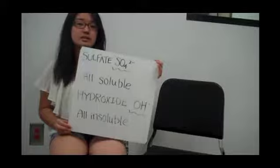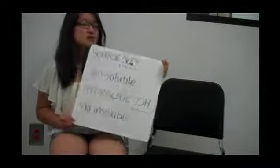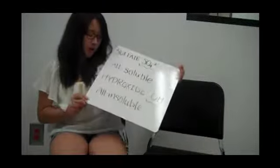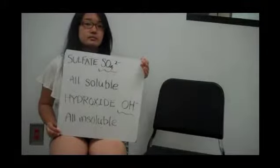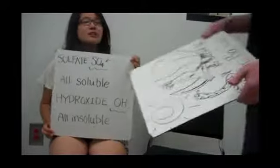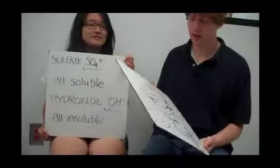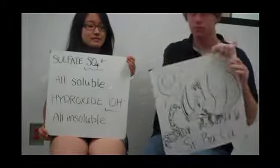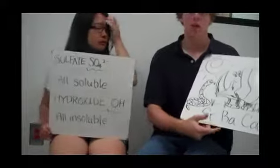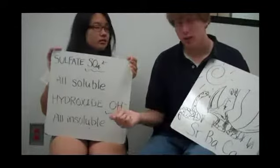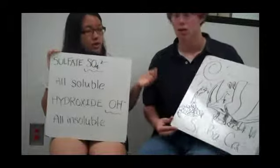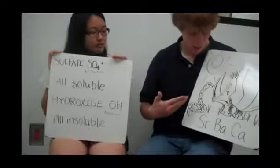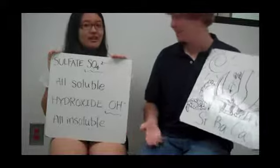Now let's talk about other substances such as sulfate and hydroxide. Sulfate, SO4 two-minus, is all soluble. And hydroxide, OH-minus, are also all insoluble. Now that's just not true — there are a few exceptions for these too. As far as sulfates go, all of them are soluble except for strontium, barium, and calcium. And all hydroxides are insoluble except for the same three elements. This drawing is 'strong rhinos battle against clever anacondas.' Now I get it.